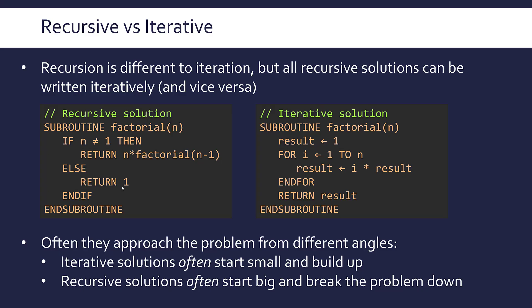The way merge sort works on lists is it'll divide the list again and again until you've got a list of one item only, and then slowly, pair by pair, it's going to sort each pair until the list is rebuilt in a sorted way. And because that's breaking it down going top-down, it's a good example of how recursion can fit in really well.